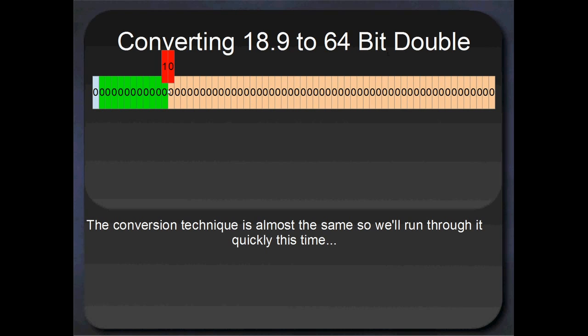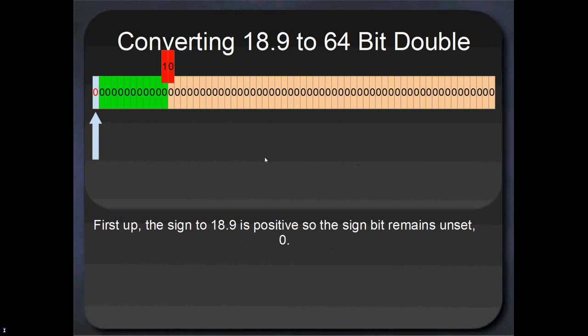Here I've drawn out all 64 bits, including the implied mantissa bit here in red. The conversion technique that I'm going to use here is almost exactly the same, but we will go through a slightly more accurate way to get the mantissa bits afterwards. First up, 18.9 is a positive number, so the sign bit is going to be zero. If 18.9 was negative, then you would just put a 1 there in your sign bit, and for the remainder of the algorithm you could pretend that the number was positive.